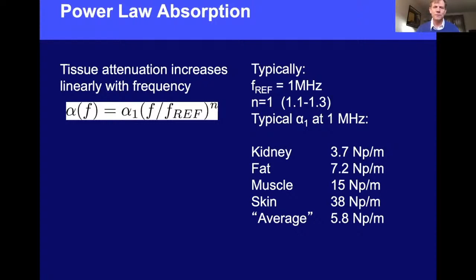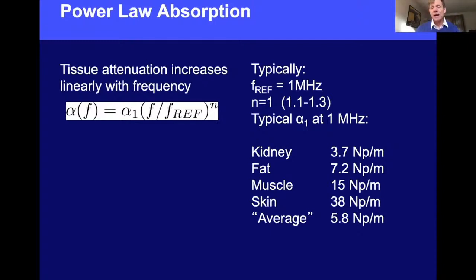Although if you look at actual data, most soft tissue values for n fall between 1.1 and 1.3, using n=1 is normally good for a small frequency range. Typical values at one megahertz: kidney ~3.7, fat ~7.2, muscle ~15 nepers per meter. These have significant variance and anisotropy — for example, absorption across muscle fibers differs from along fibers. Skin has the highest absorption at about 38, and an average over soft tissues is about 5.8 nepers per meter.